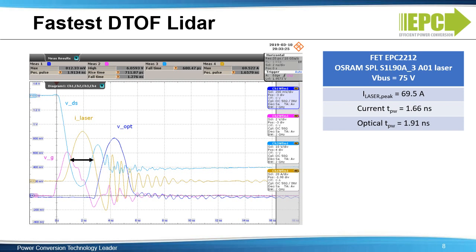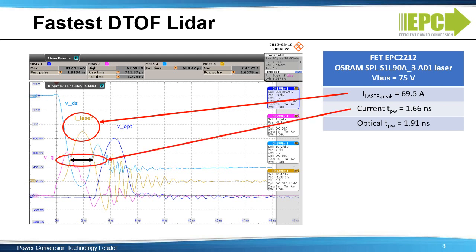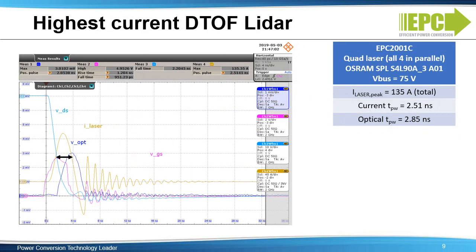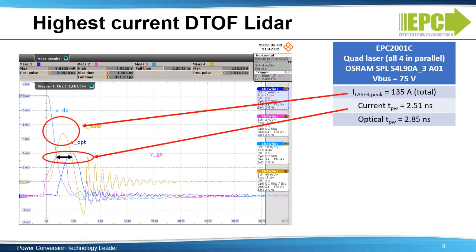With this design, results show a peak current of 69.5 amperes and a pulse width of only 1.66 nanoseconds for the EPC-9126. The EPC-9126HC uses the same ultra-low inductance layout but with the higher-current EPC-2001C eGaN FET, which has double the current capability of the EPC-2212 for only a relatively small increase in pulse width. Results show a peak current of 135 amperes and a pulse width of only 2.51 nanoseconds.